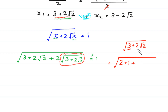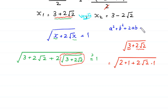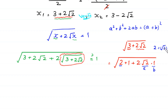We simplify the expression square root of (3 plus 2√2). We want to write this as a perfect square using the identity a² plus 2ab plus b² equals (a plus b)². Here √2 plays the role of a and 1 plays the role of b.